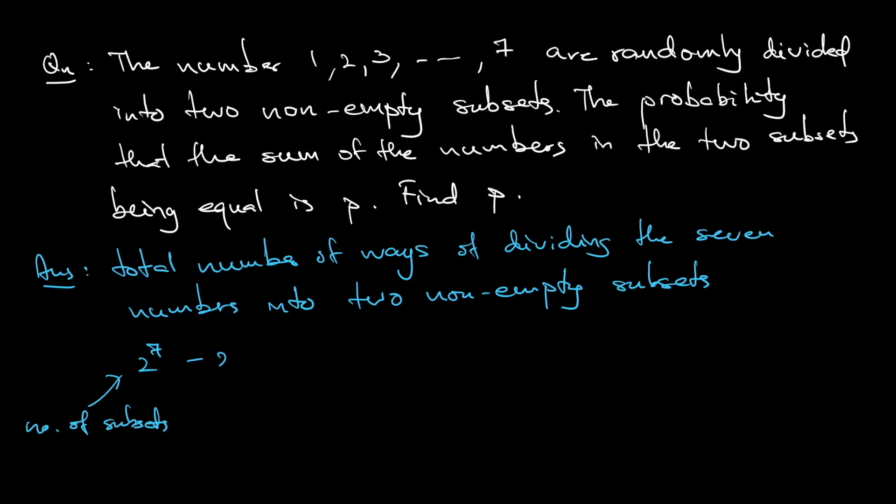But I need to minus 2 because the subsets must be non-empty. Why minus 2 and not minus 1? Because if I need to split, and one subset is empty, the other one is the full set. So I need to ignore the cases where one subset is empty or includes everything — those two cases.